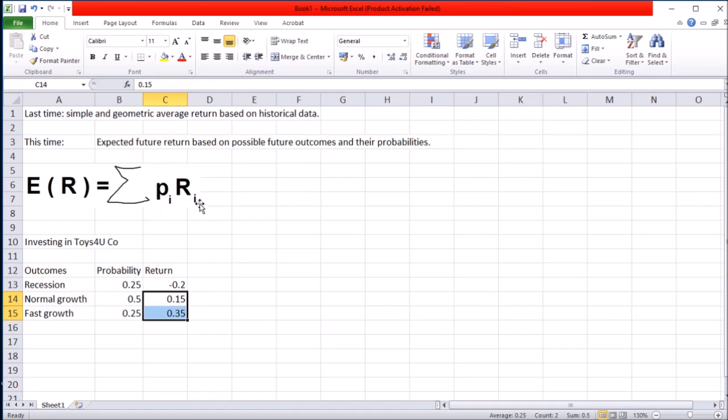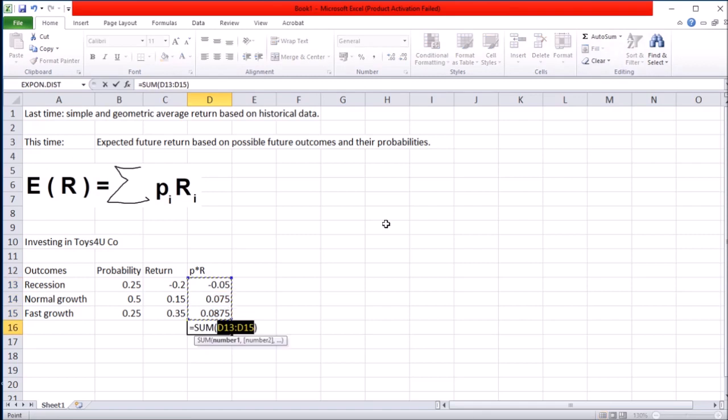As this formula suggests, we want to multiply the probabilities by this return for each of the outcomes. Probability times the return for each of the outcomes. Once you add up all of them, that is your expected return, which is 11.25%.